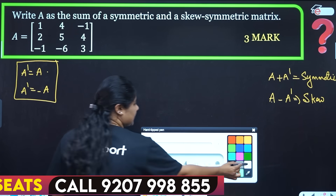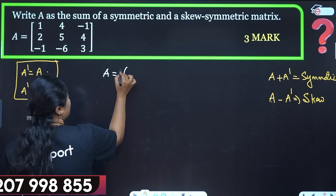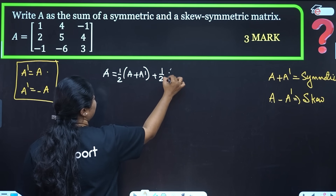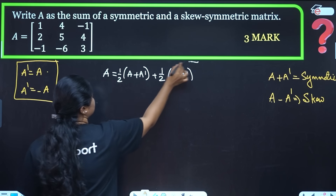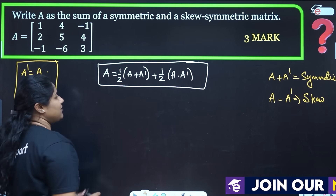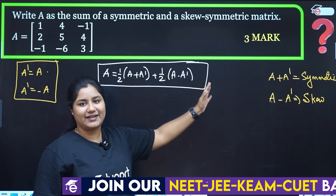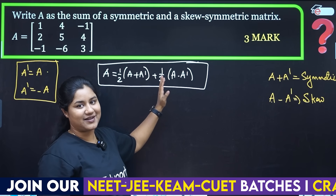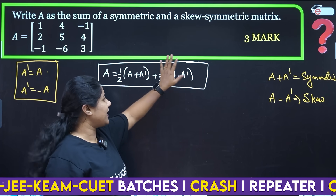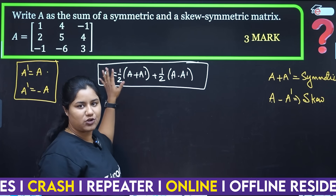We have a formula: matrix A equals half into (A plus A-transpose) plus half into (A minus A-transpose). Here, (A plus A-transpose) is the symmetric matrix and (A minus A-transpose) is the skew-symmetric matrix, each multiplied by half.